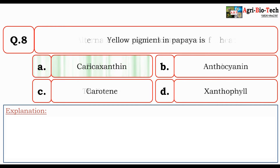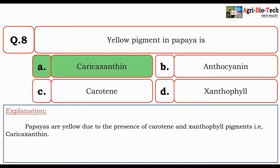Next question: The yellow pigment in papaya is — Caricoxanthin, Anthocyanin, Carotene, or Xanthophyll? The correct answer is Caricoxanthin. Papayas are yellow due to the presence of Carotene and Xanthophyll pigments, collectively referred to as Caricoxanthin.